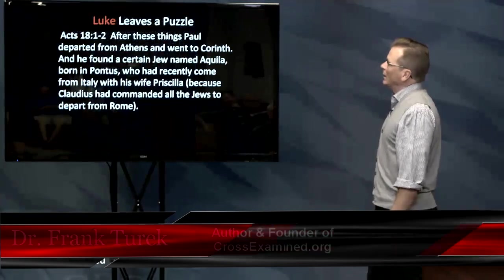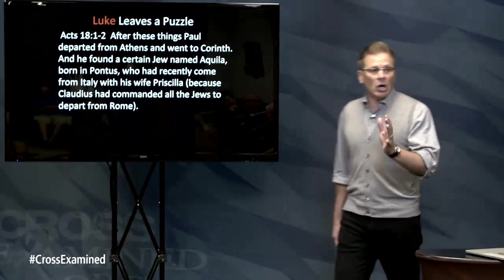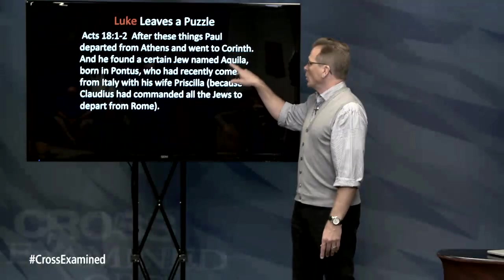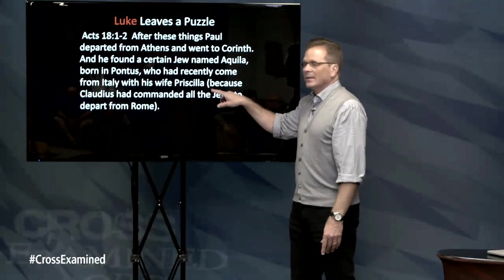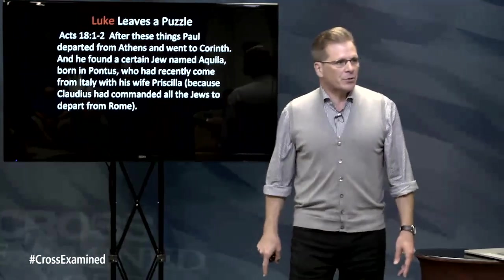Luke writes the book of Acts and leaves a puzzle. Right after Paul is on Mars Hill in Athens, it says: 'Paul departed from Athens and went to Corinth, and he found a certain Jew named Aquila, born in Pontus, who had recently come from Italy with his wife Priscilla — because Claudius commanded all the Jews to depart from Rome.' So Aquila and Priscilla got booted out of Rome because Claudius expelled all the Jews.